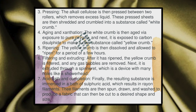Finally, the resulting substance is immersed in a bath of sulphuric acid, which results in rayon's filaments. These filaments are then spun, drawn, and washed to produce a fabric that can be cut into a desirable shape and size.